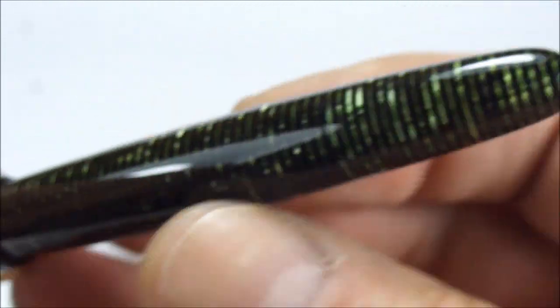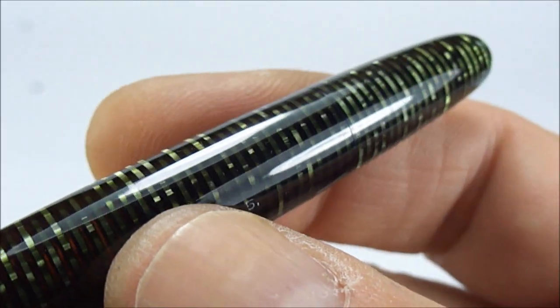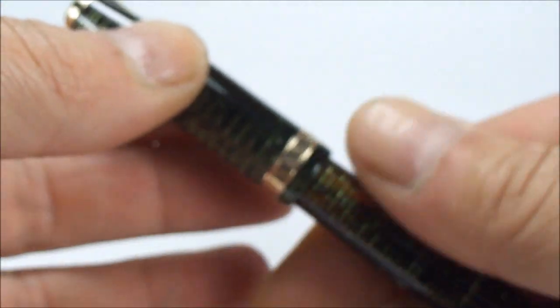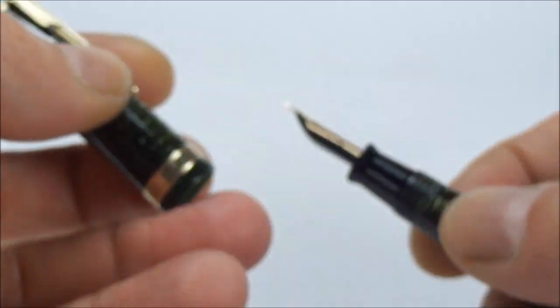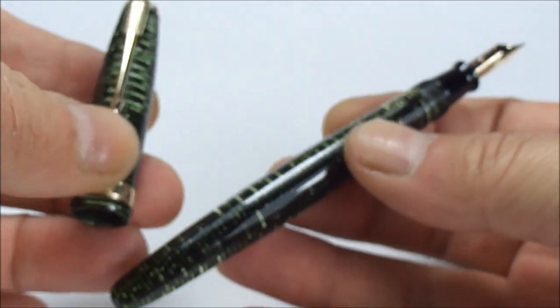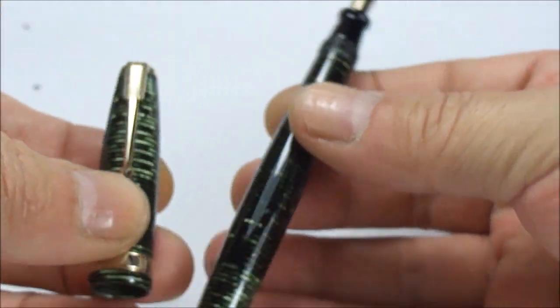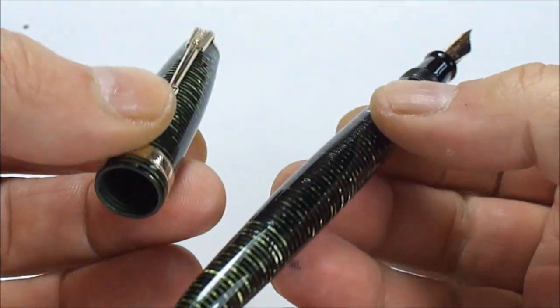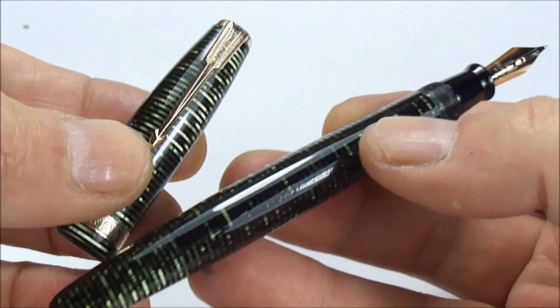So as you can see the barrel imprint is nice and clear. As I say this is a Vacumatic which means it's got this blind cap here which we'll show you in a moment but first of all let's take the cap off which unscrews and is lovely and tight just as it should be.